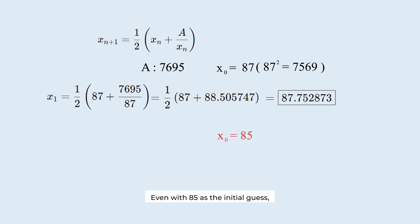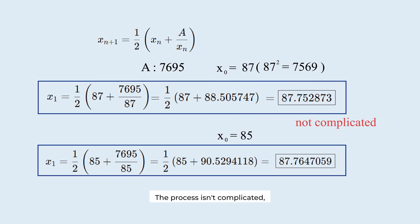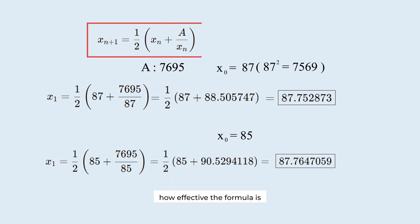Even with 85 as the initial guess, the first approximation is this. The process isn't complicated, yet the results are remarkably accurate. This clearly demonstrates how effective the formula is for finding square roots.